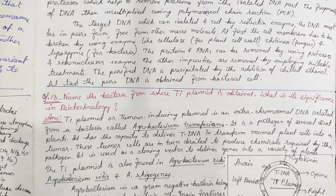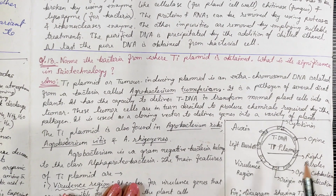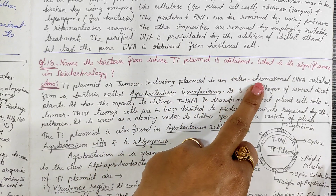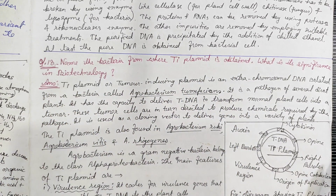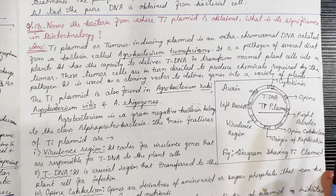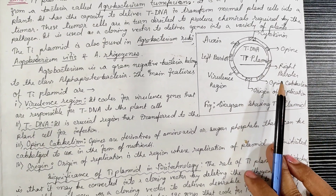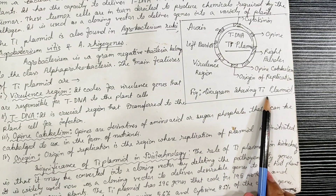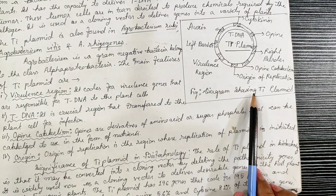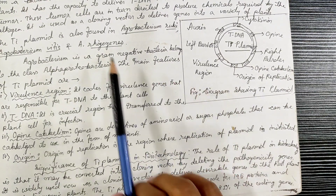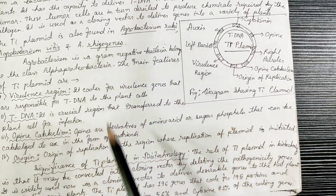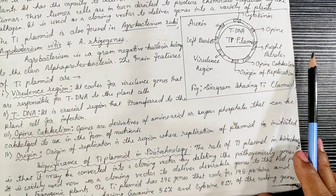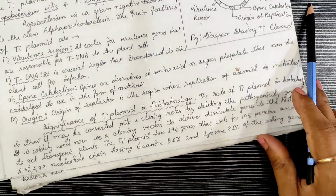Next: name the bacteria from where the Ti plasmid is obtained and what is its significance in biotechnology. Ti plasmid contains T-DNA. It is a tumour-inducing plasmid. Its significance lies in recombinant biotechnology.